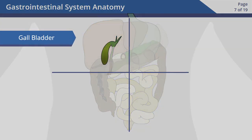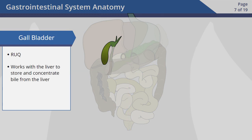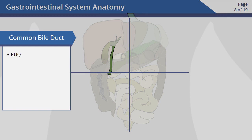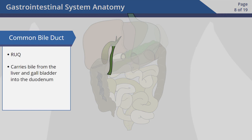The gallbladder is a pouch that's under the liver in the right upper quadrant. It works with the liver to both store and concentrate bile from the liver, which breaks down fats. The common bile duct is tube-like and located in the right upper quadrant. It carries bile from the liver and gallbladder into the duodenum by passing it through the pancreas.